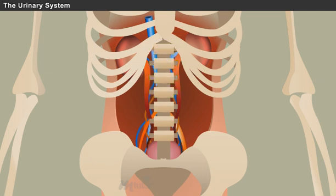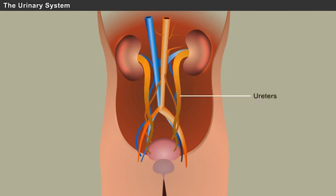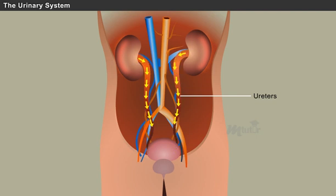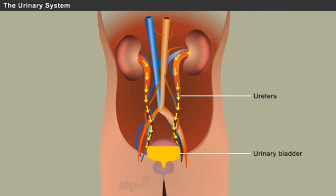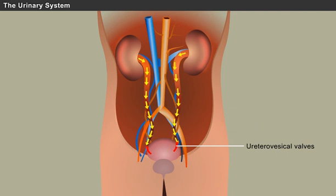The upper portions of the kidneys are protected by the 11th and 12th ribs. Arising from the two kidneys are two narrow tubes called ureters that carry urine from the kidneys to the bladder, running parallel to the vertebral column. Gravity and peristalsis of smooth muscle tissue in the walls of the ureters move urine toward the urinary bladder. The ends of the ureters extend slightly into the urinary bladder and are sealed at the point of entry by the ureterovesical valves, which prevent urine from flowing back toward the kidneys.